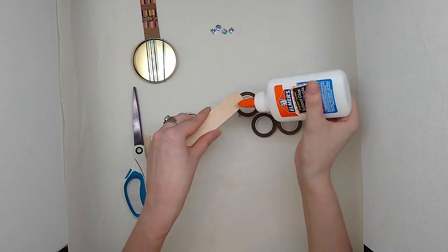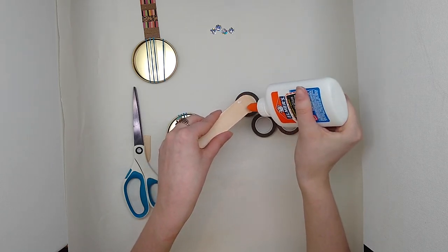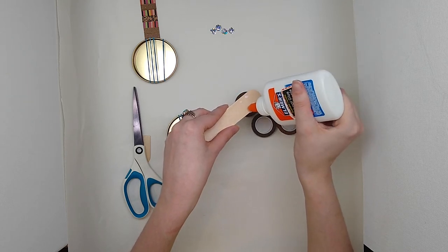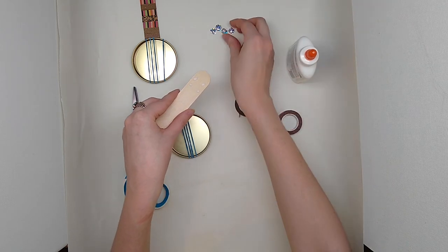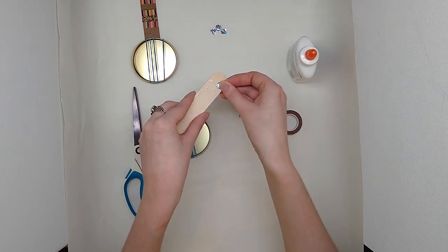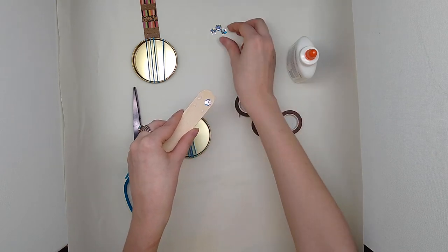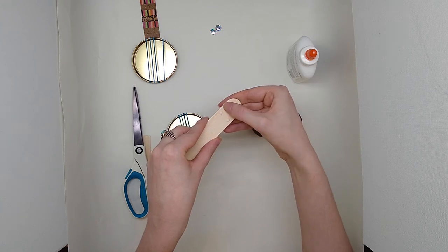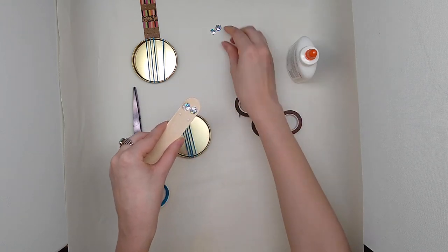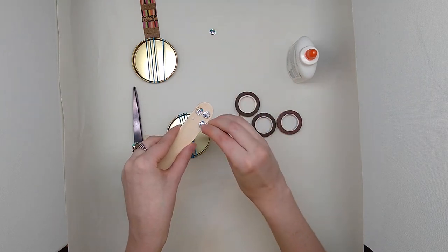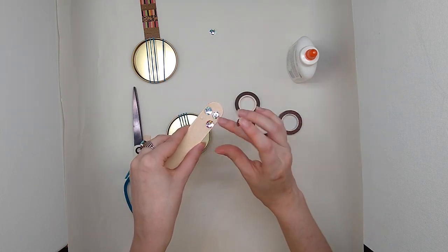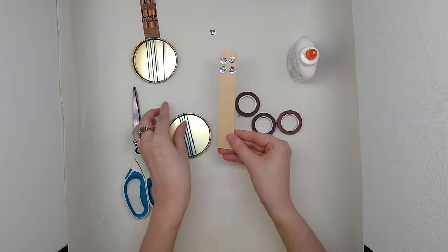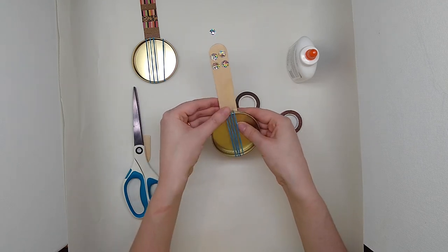I like to add my tuning knob sequins first just so I don't put the washi tape up too high and then I don't have room for my knobs. I'm just using Elmer's glue - you could use craft glue that might stick better, also go ahead and use that double-sided tape. Those are gonna dry down and look great.